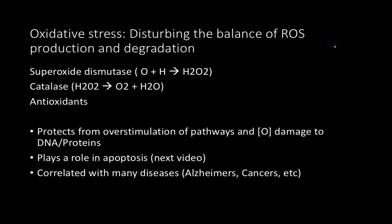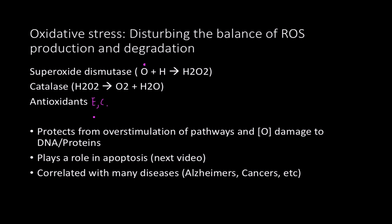Oxidative stress is the concept where the balance of reactive oxygen species production and degradation is thrown off. To protect against ROS, we produce enzymes like superoxide dismutase, which converts superoxide into hydrogen peroxide, and catalase, which converts hydrogen peroxide into oxygen and water. Antioxidants such as vitamins E and C also play a role — though Linus Pauling thought he could live forever on antioxidants, there is a limit to how much we can absorb.